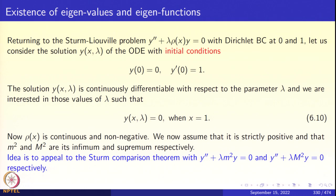We put x = 1 because we are interested in the boundary value problem. y(0) is already 0; we also want y(1) = 0, and we need to select λ such that y(1, λ) = 0. ρ(x) is continuous and strictly positive on [0, 1], and m² and M² are the infimum and supremum of ρ(x), respectively.